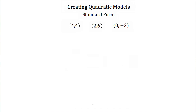Now lastly, what if we're not given a graph? We're just given several points. Well, we can use these points to write a quadratic equation in standard form. We're going to need at least three points to do this, but remember that standard form is y is equal to ax squared plus bx plus c.